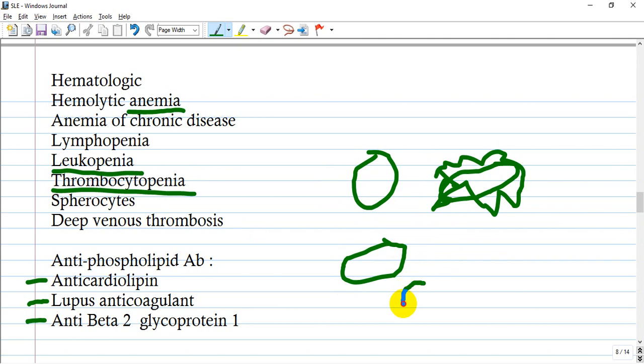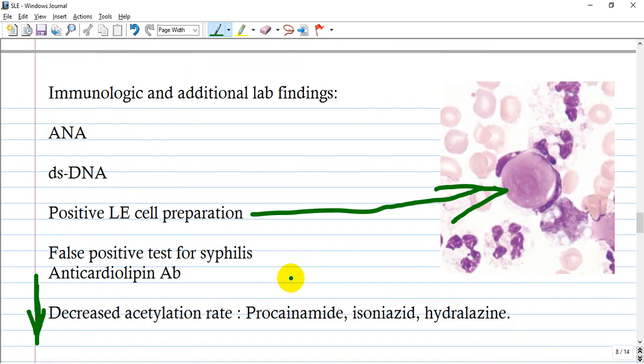Deep vein thrombosis occurs because of formation of antibodies like lupus anticoagulant, anti-cardiolipin, anti-beta-2-glycoprotein-1. These form immune complexes with thrombocytes, forming thrombi.